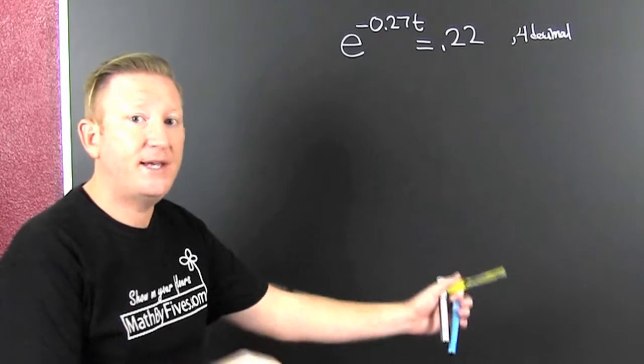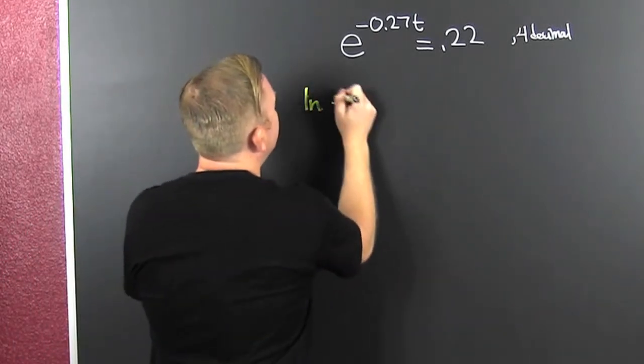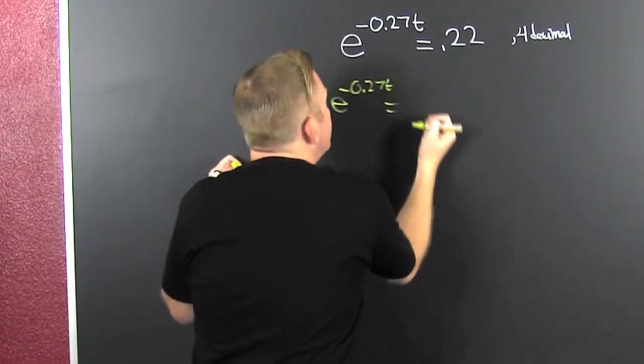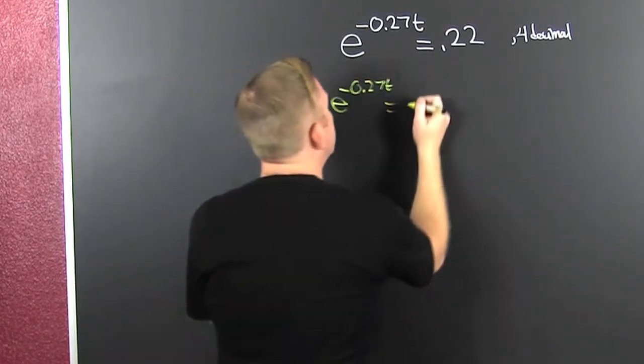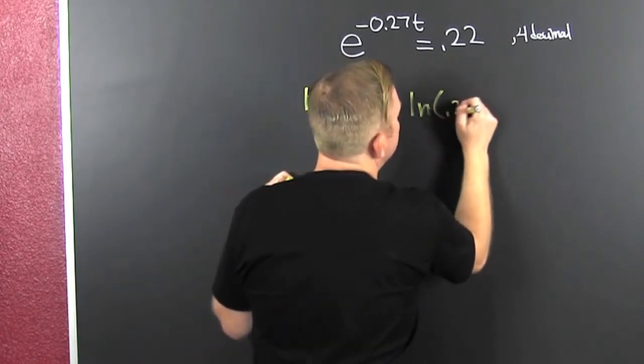Because the natural log is the log base e. Now we go logging. We're looking at the natural log of e to the minus 0.27t. What you do on one side, you must also do to the other. It's the first of your golden rules. That's the natural log of 0.22.